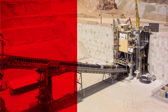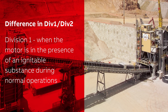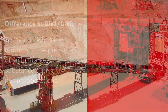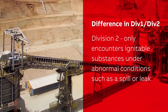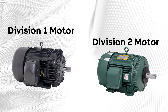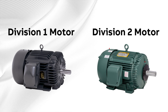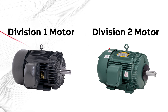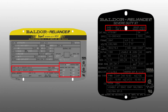In summary, we covered the difference between Division 1 and Division 2 areas — Division 1 being when the motor is in the presence of an ignitable substance during normal operations, and Division 2 being when the motor only encounters ignitable substances under abnormal conditions such as a spill or leak. We also looked at the classes and groups that define hazardous substances, and the differences in the motors: Division 1 having long flame paths, limited surface temperatures, and thicker enclosures; Division 2 having a standard enclosure, limited surface temperatures, and no sparking devices. Finally, we covered how to identify Division 1 and Division 2 motors by their nameplates.